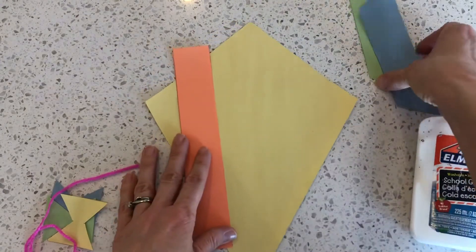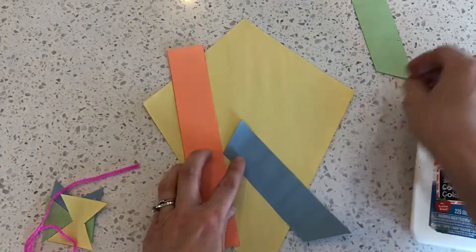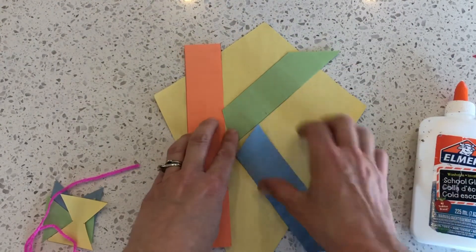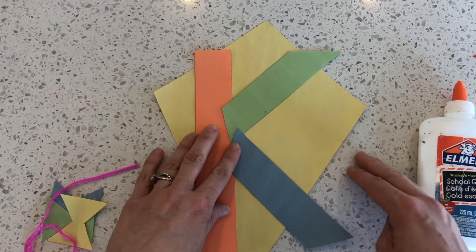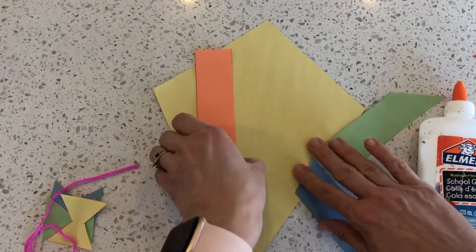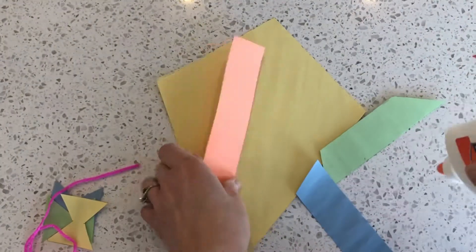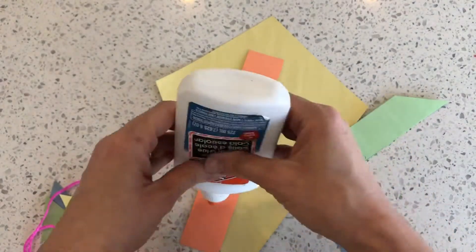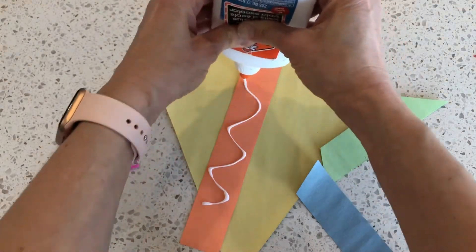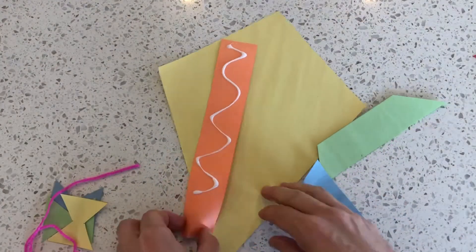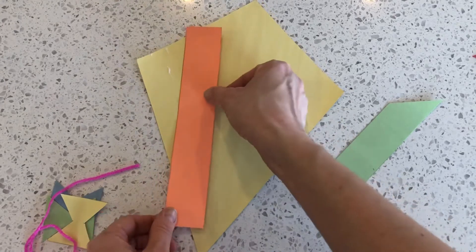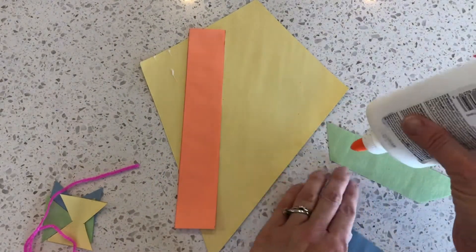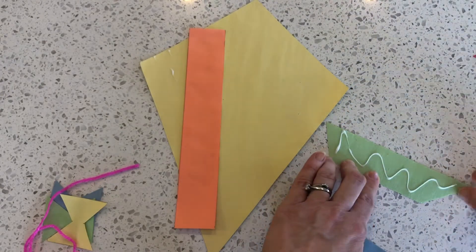So first we'll start by figuring out where our lines for our K go. Once you've figured that out, you can glue them onto the kite. Start with this big line, and then glue on the other two lines to make your letter K.